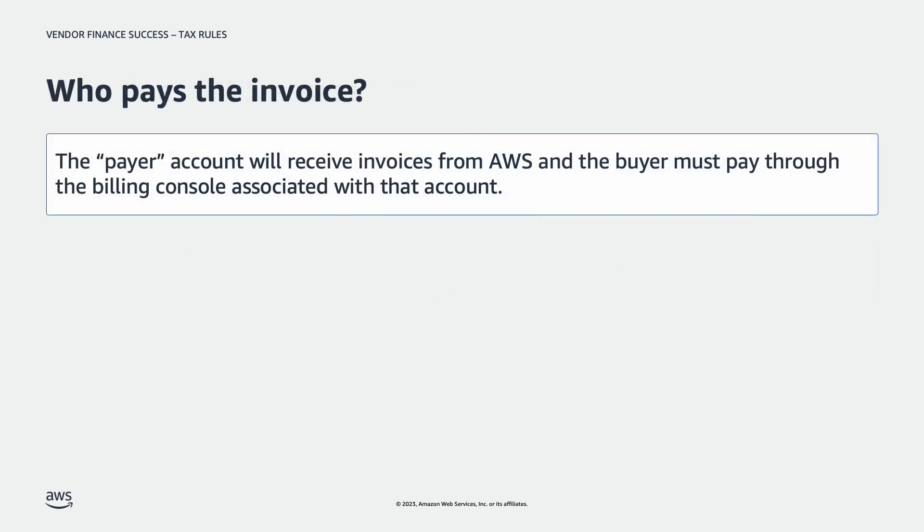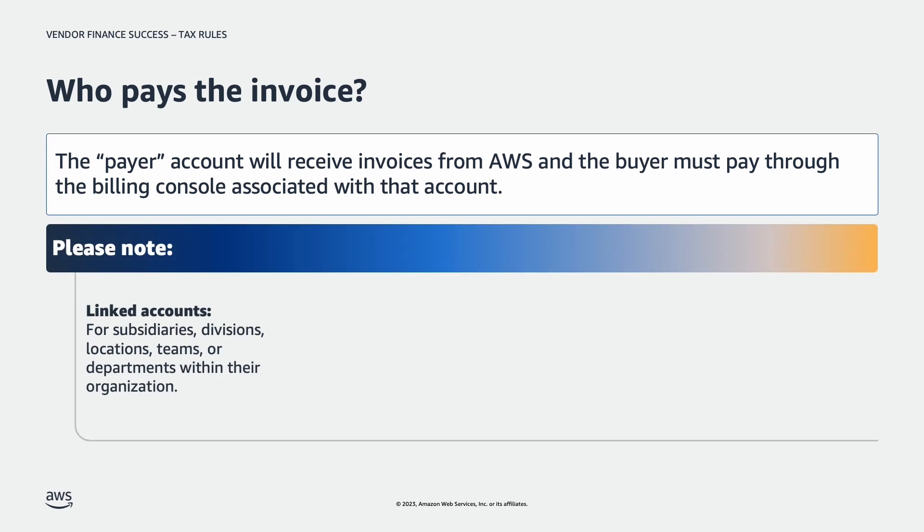So, who pays the invoice? There are a few different things to consider when answering this question. The payer account is the account that will receive the invoices from AWS Marketplace. Customers can set up linked accounts for subsidiaries, divisions, locations, departments, etc., within their organization to track purchases or budget by separate P&Ls. Usage per linked account will show on each invoice.